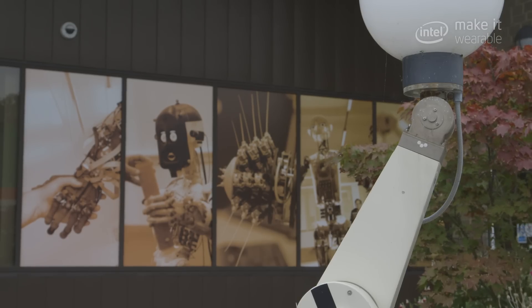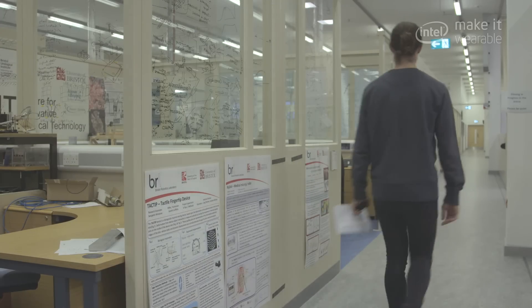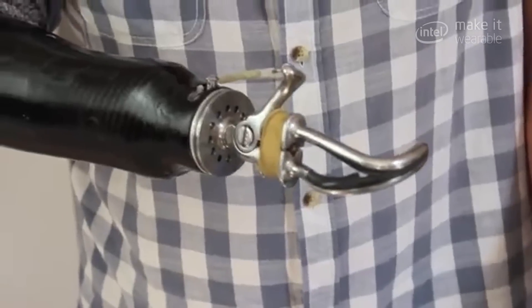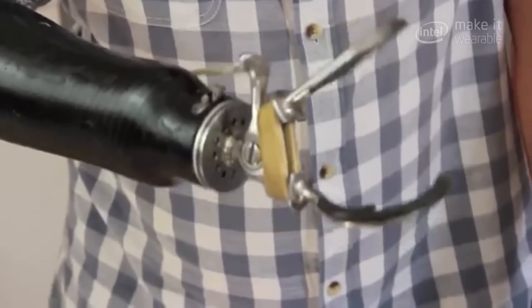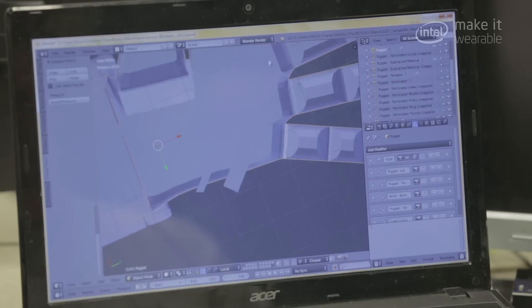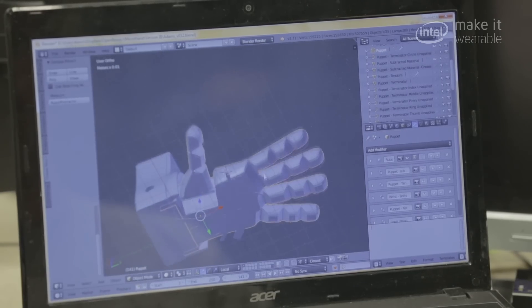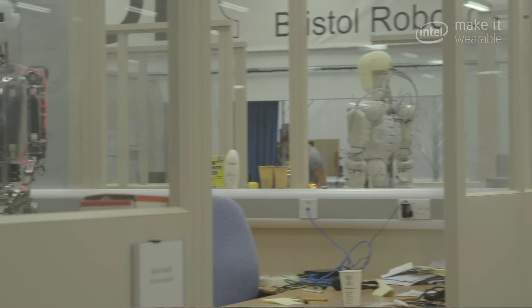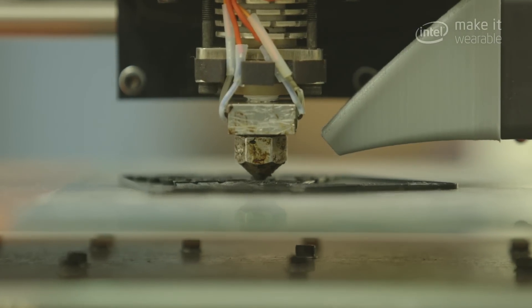The prosthetics market at the moment has a couple of different classes of devices, so you have things like hooks that are operated by pulleys, and then at the really high end of the market you do have these really advanced robotic prosthetics, but they're so expensive that very few people can afford them themselves.